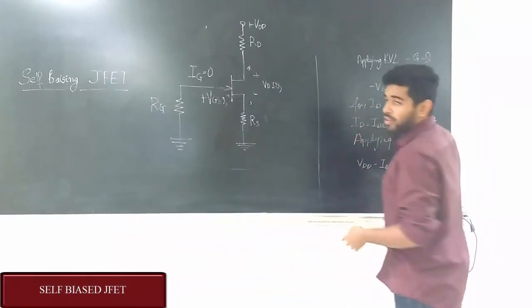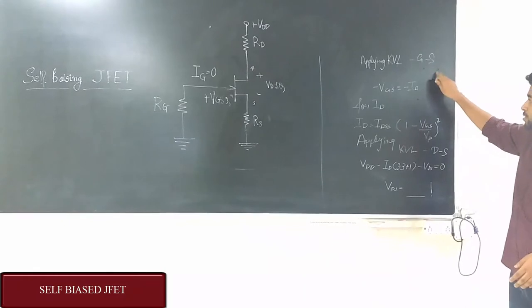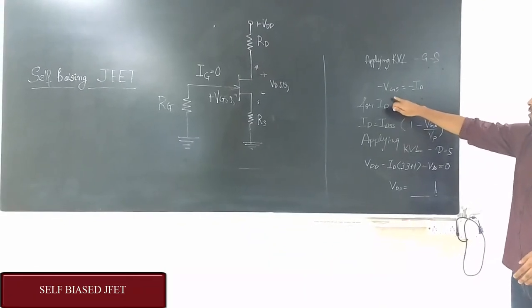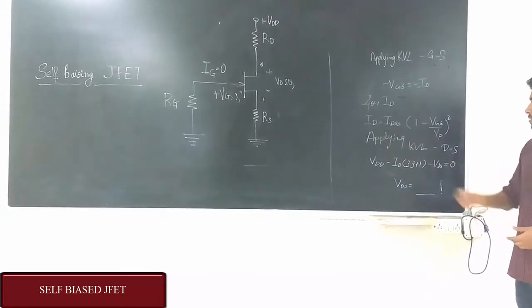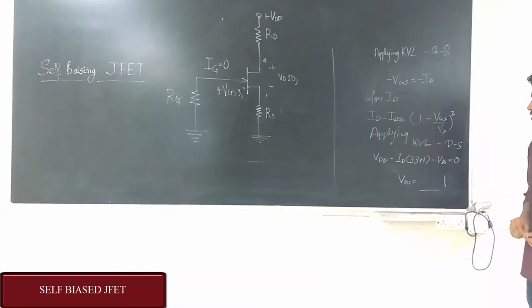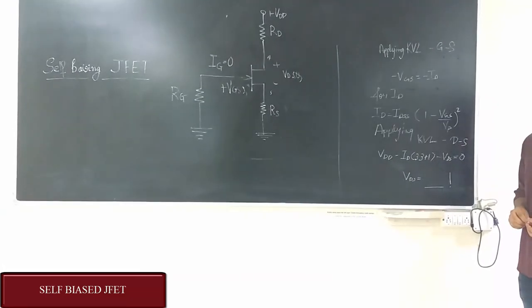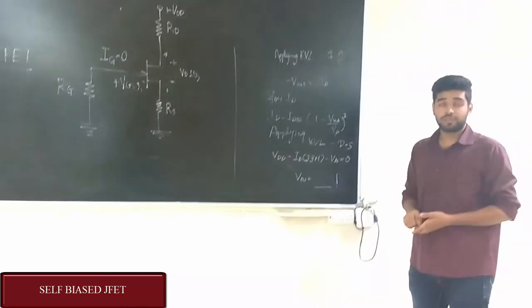So in order to calculate ID, firstly, KVL is applied from gate to source which gives us the equation -VGS = -ID×RS. Now to calculate ID we have a formula: ID = IDSS(1 - VGS/VP)². This equation will give us two values. The lower value of ID is selected.